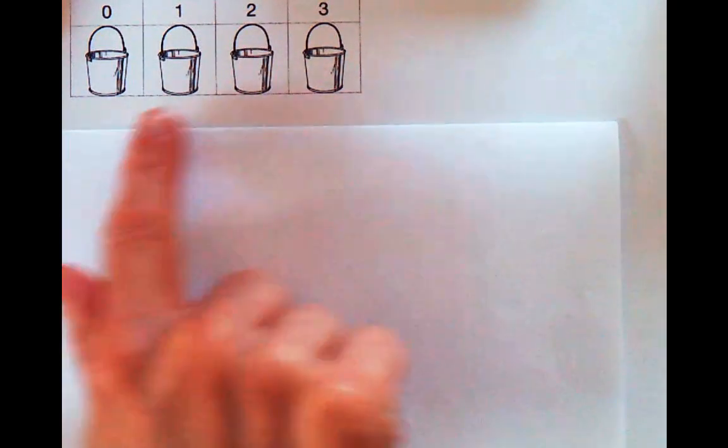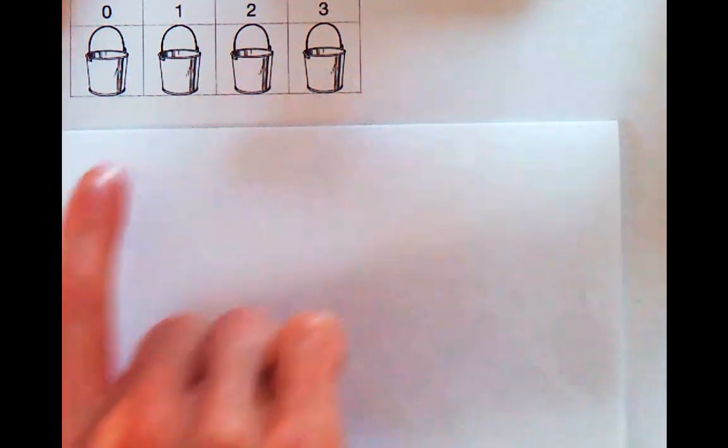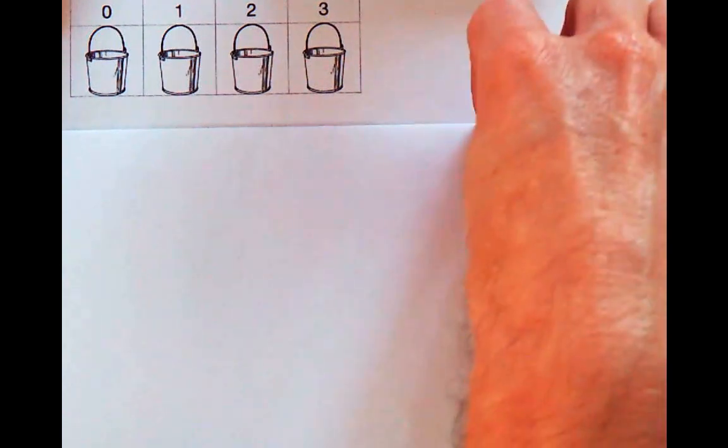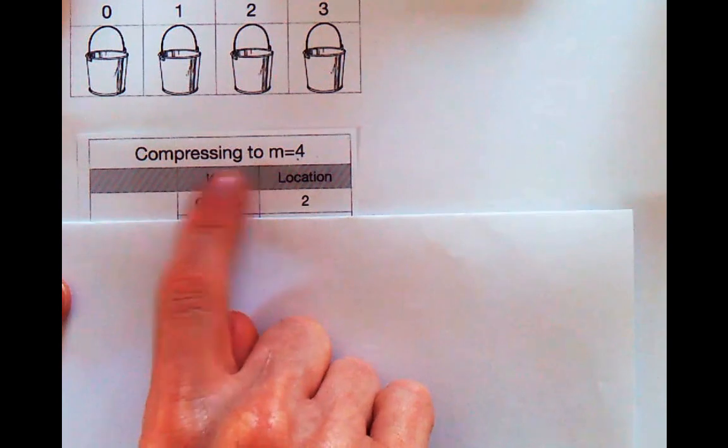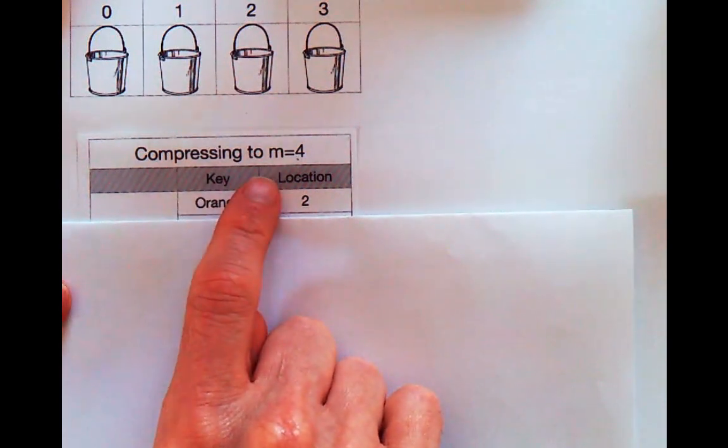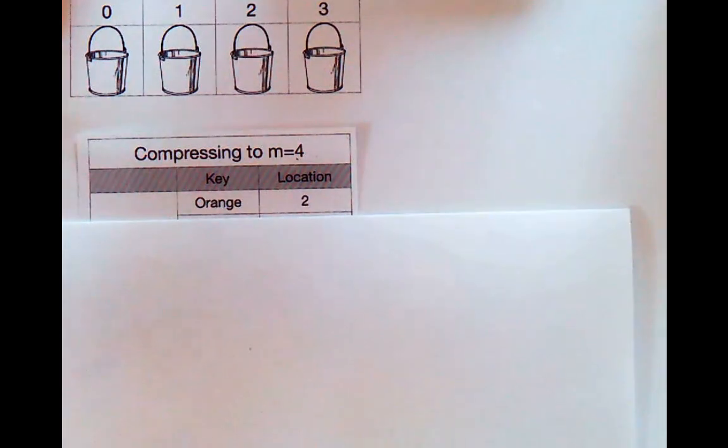Let's imagine we've got a relatively small array set up for separate chaining. It has m equals four, four different buckets that we can put things in. We'll go through our process of adding data just like before, thinking of that compressing component of the hash process as specifically using m equals four, which is important here.